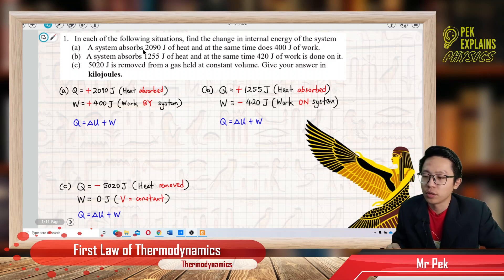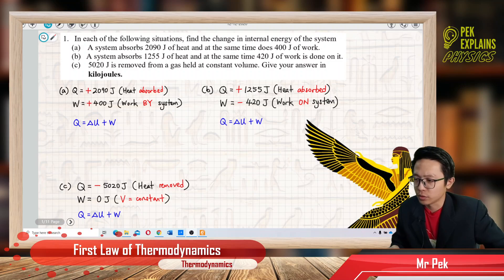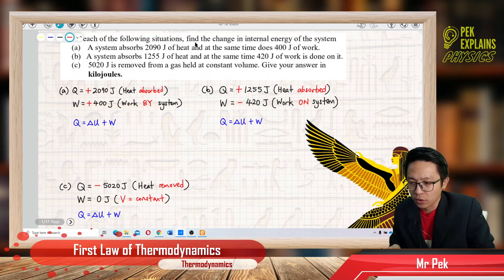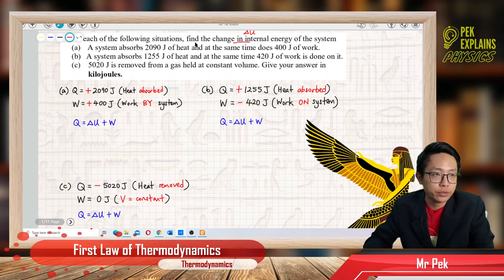A system absorbs 2090 joule of heat and at the same time does 400 joule of work. So here, what is given? The question asks for change in internal energy, that means delta U. We need to find delta U.